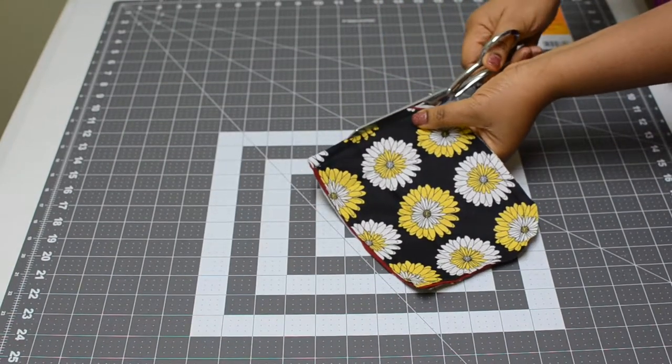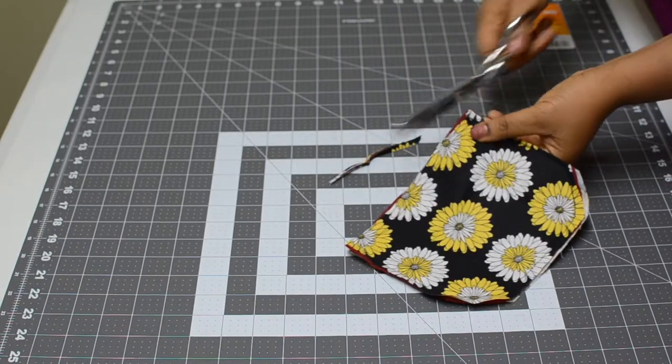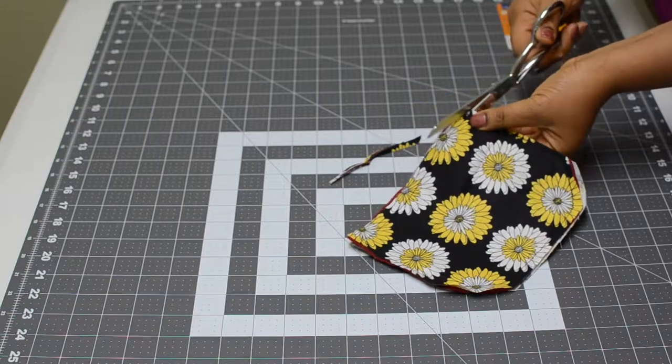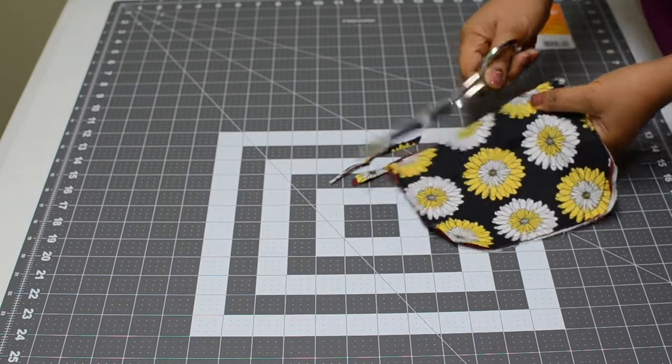When you're done, cut it all the way down to almost a quarter of an inch. This will help when you add in the bias tape.